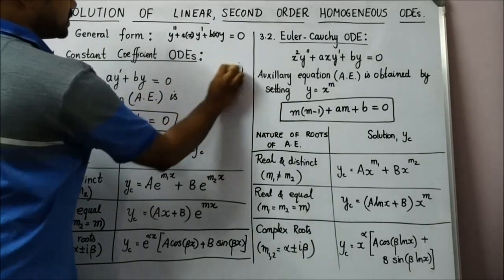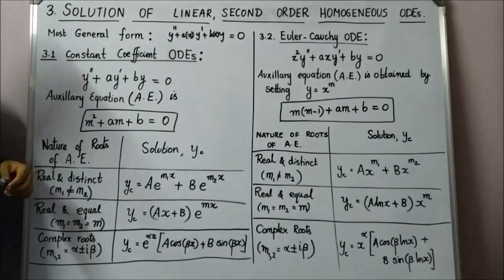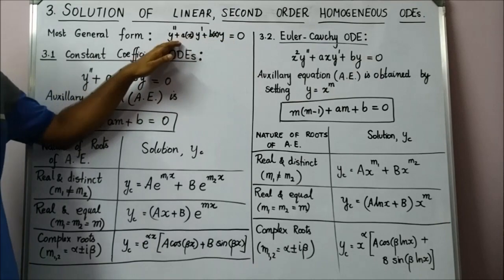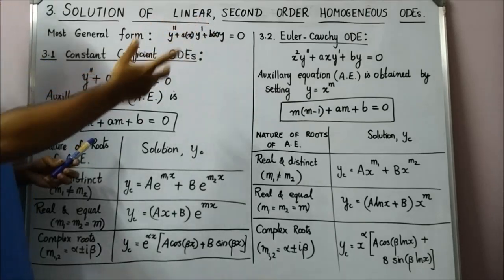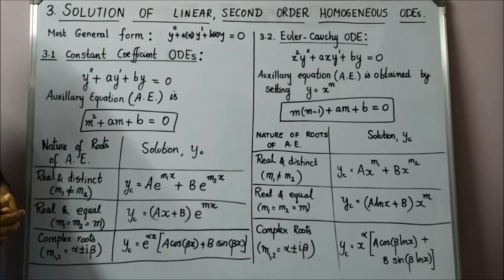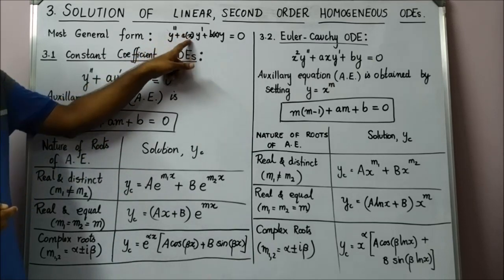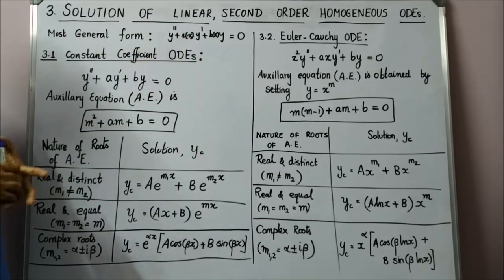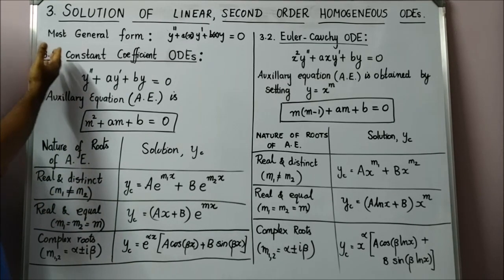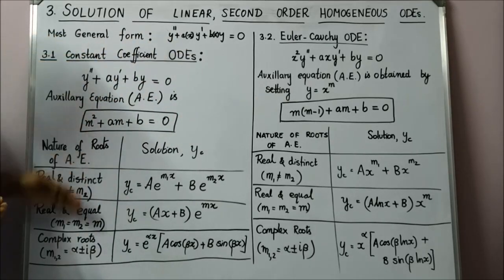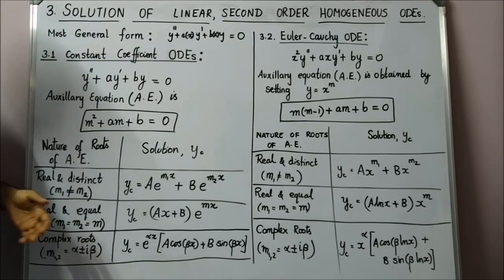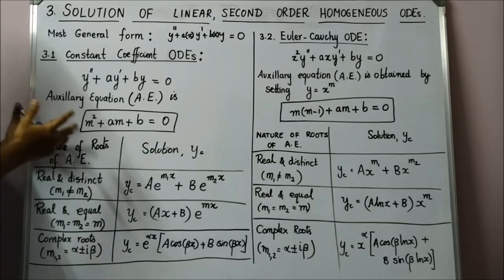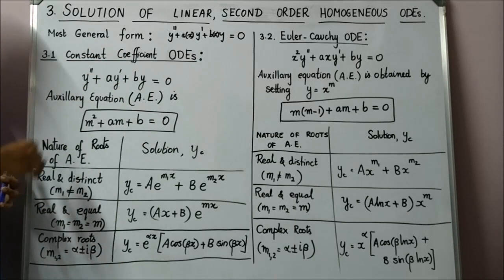So let us have that in mind — the most general form. As I have mentioned in the lecture, the most general form does not have an explicit solution. That is, you cannot have a general solution for arbitrary A of X and B of X; there is no solution procedure for a second order ODE in general. Only in special cases of A of X and B of X do you have a solution procedure. The first special case is when the coefficients are all constants — the constant coefficient ODE.